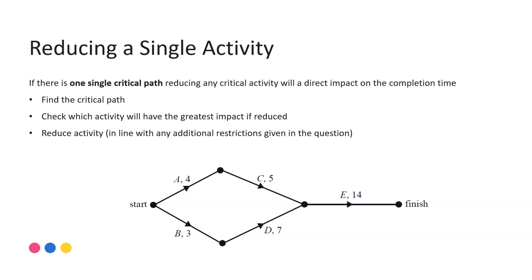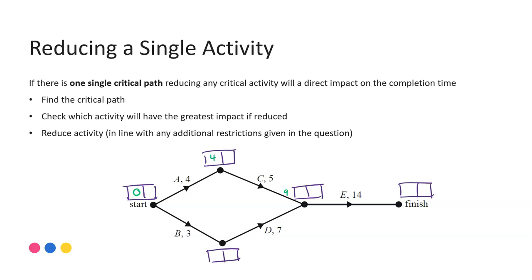From a general sense, if we look at this network and complete a forward and backward scan — remembering our setup is to put double boxes on each of our vertices to track our earlier start times and later start times — starting at zero, travelling along activity A takes four, plus activity C is five. We have to consider both C and D coming into that point. Going back to zero, plus the duration of B (three), plus the duration of D (seven), gives me 10 at this point. E can't commence until both C and D are completed, so we start E at 10. Then 10 plus 14 gives 24 as our completion time.